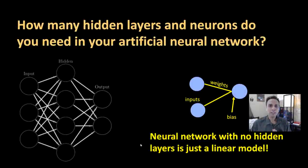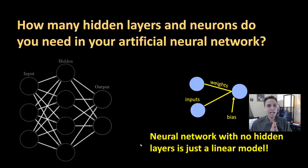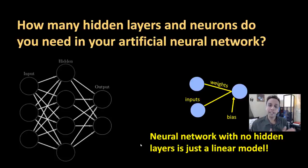Hi everyone. I'm recording this video because many of you asked me about this specific topic: how many layers or how many hidden layers do you need in your artificial neural network, and how many neurons? I'd be very surprised if anyone has a definitive answer, but let's have a quick look at the artificial neural network and see if we can come up with certain guidelines that help us define the number of layers.